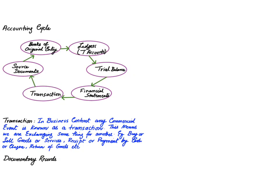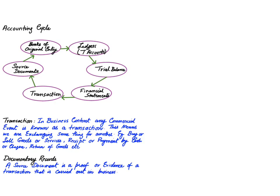After a transaction, we move forward to the source document. A source document, also known as a documentary record, is the proof of any business transaction. If I tell you I've sold goods worth $10,000, you may ask: what is the proof? The document I make as evidence is known as the source document — a proof or evidence of a transaction that has taken place in a business.